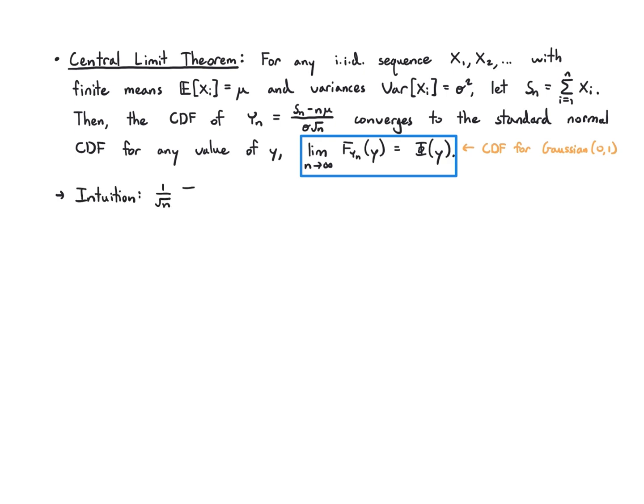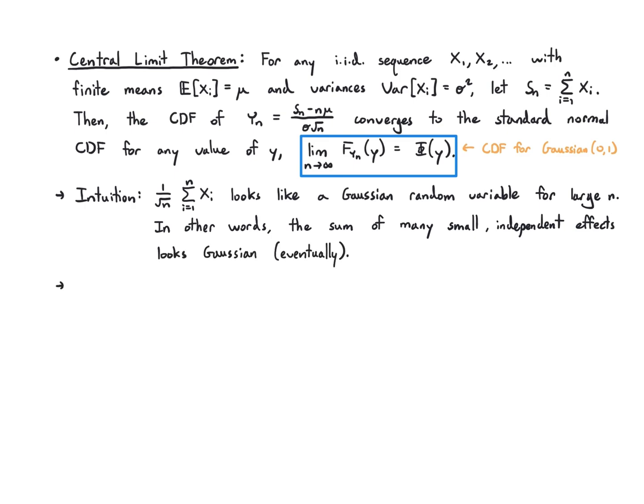That's a long statement. The intuition is that 1 over √n times the sum of the random variables looks Gaussian for large n, and basically the sum of many small independent effects looks Gaussian eventually. So let's just look at this visually to see what I mean.